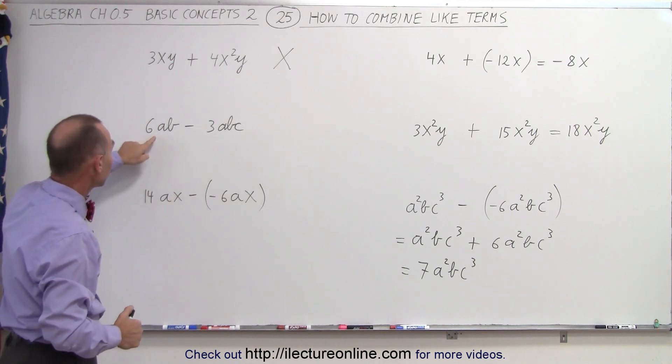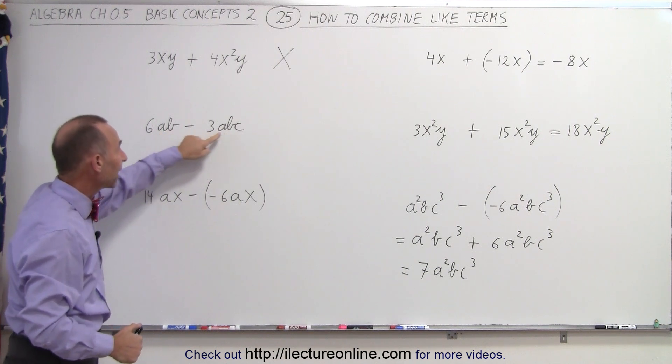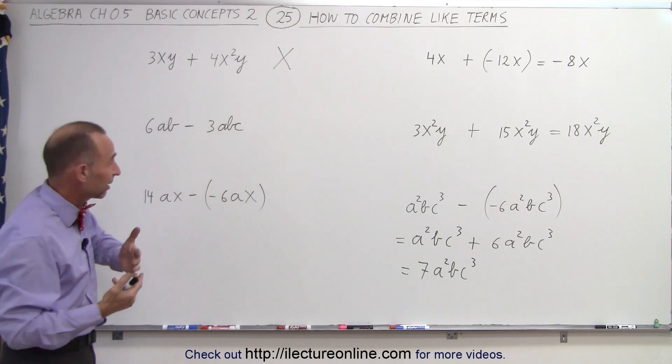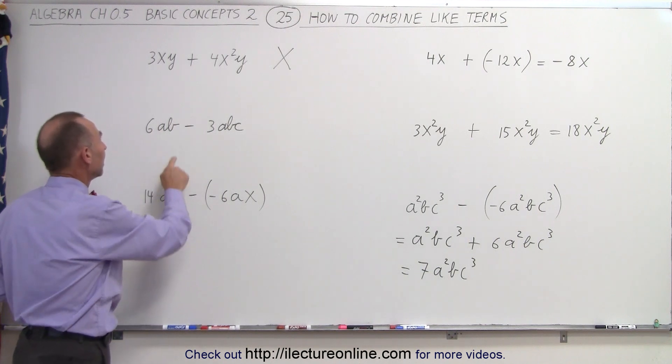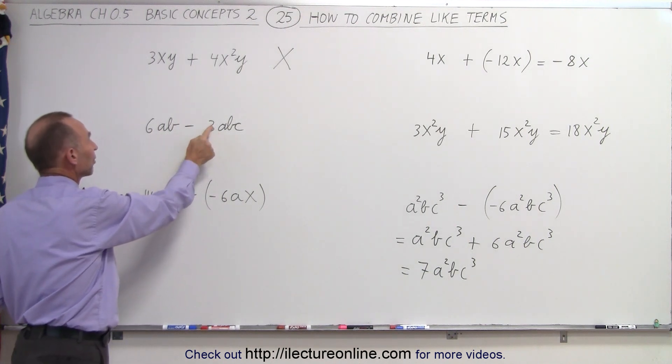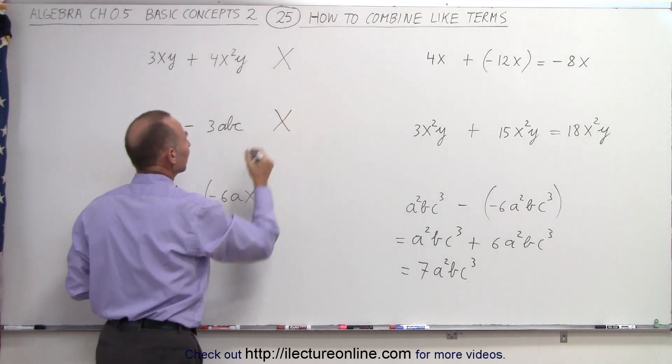Same over here: we have 6ab minus 3abc. Since they're not like terms, even though it kind of looks like they're partially alike, that doesn't matter. They need to be completely alike—you need to have abc here before you can subtract this from that. So again, there's nothing more we can do. We just leave it the way it is.